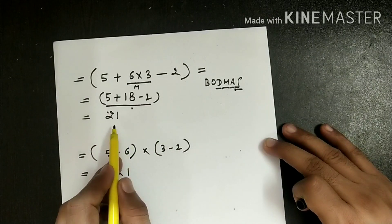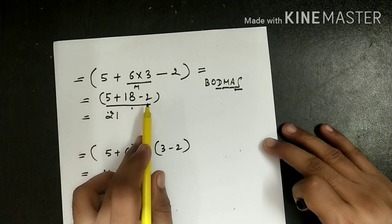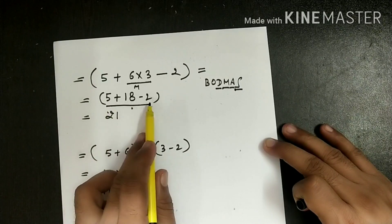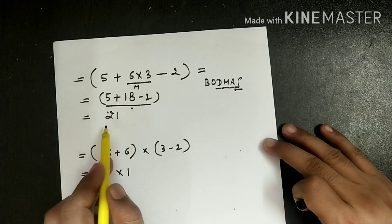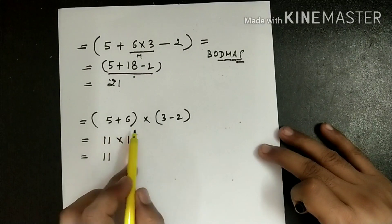we have solved this: 5 plus 18 minus 2 is 21. And when we have taken the numbers in bracket